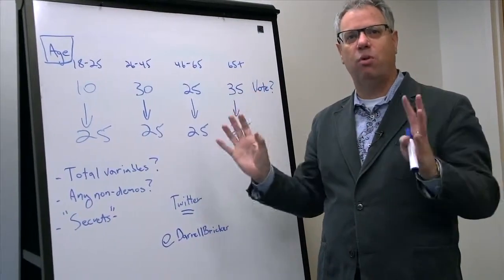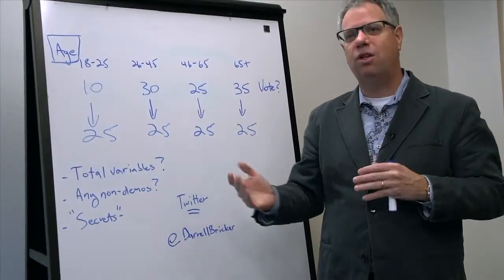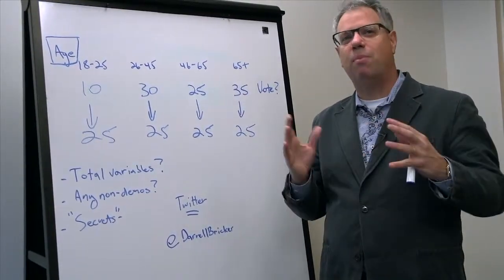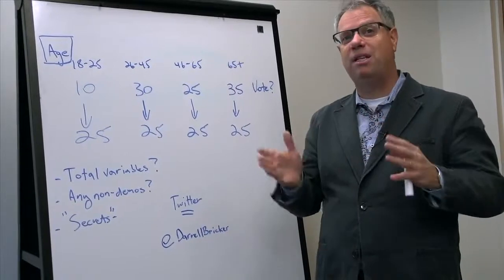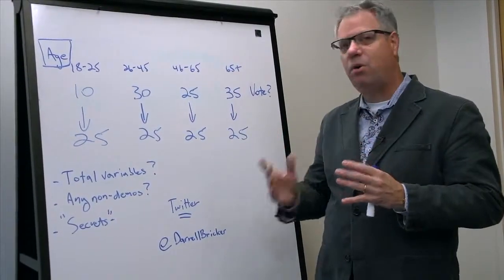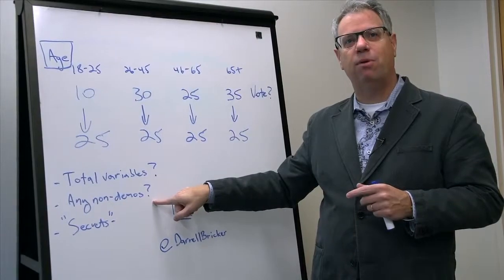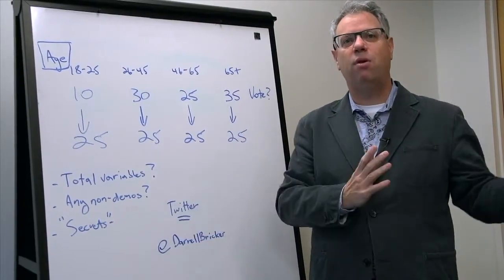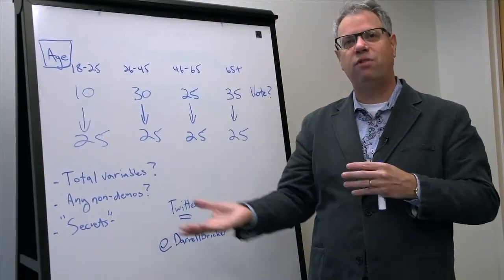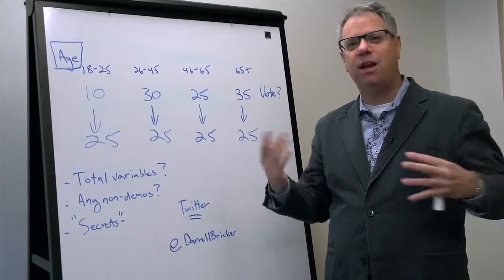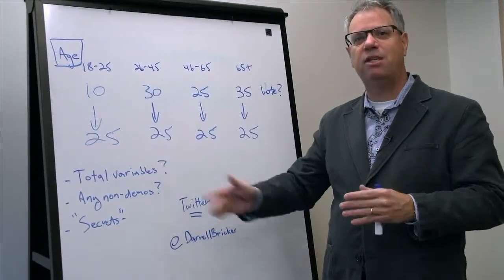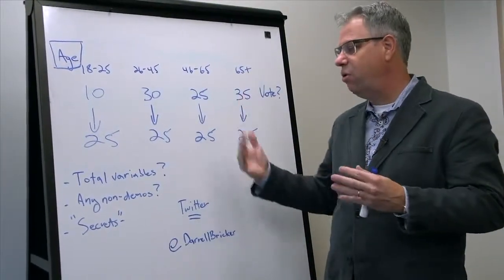Whatever the variables were that you were weighting against should be disclosed, not just to say, we weighted it to represent the general population. I want to know how many different ways you did it. The next thing I'd want to know is any non-demographic variables. Did you wait according to previous vote? Did you wait according to likelihood of turnout? Did you wait according to anything else that doesn't have anything to do with demographics? They should disclose that and they should show what the impact is.